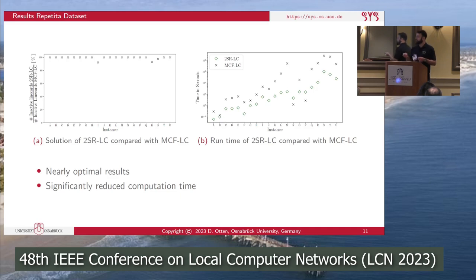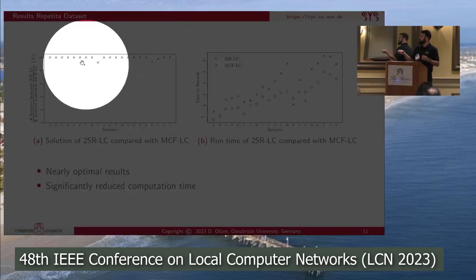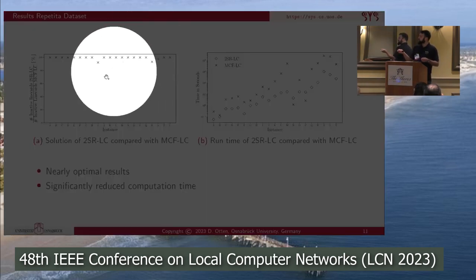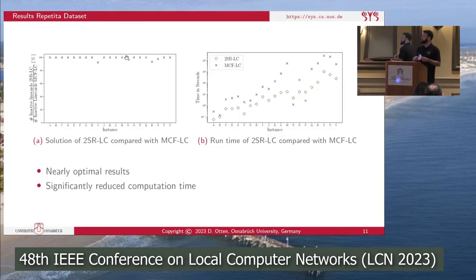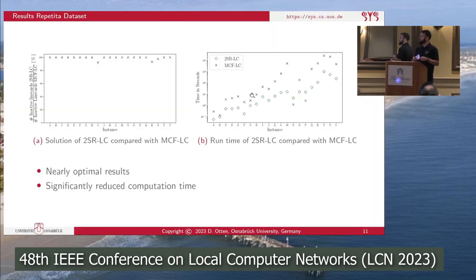We compared the solution value of 2SR-LC with the MCF-LC ILP — our heuristic against the optimal result. In 18 out of 21 instances, the 2SR heuristic calculated an optimal result. In the remaining three instances, we obtained approximately 93% of the optimal result. However, the computation time was reduced significantly — note that the timescale uses a log scale.